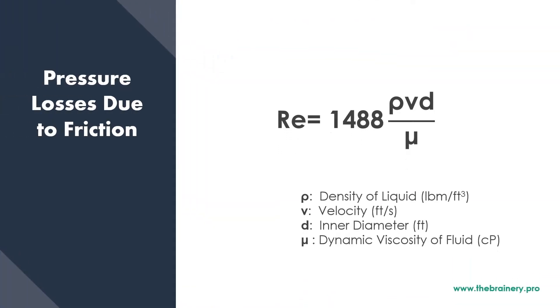And now let's talk a little bit about the Reynolds number. By definition, Reynolds number is the density of the liquid multiplied by the velocity multiplied by the inner diameter of the pipe divided by the dynamic viscosity of the liquid.